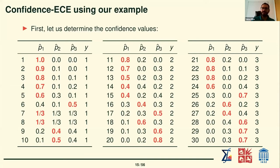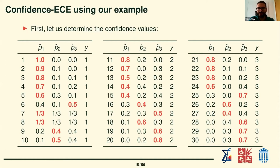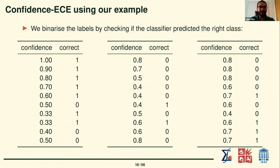To get confidence values, for each instance you take the three probabilities and select the highest — that is your confidence. For instances seven and eight there is a three-way tie where all classes got one-third probability. In Python, using argmax returns the first occurrence of the maximum value, so the winning class was class one in that case. Continuing instance-wise, selecting the highest probability for each instance gives a new binary problem with confidence scores.